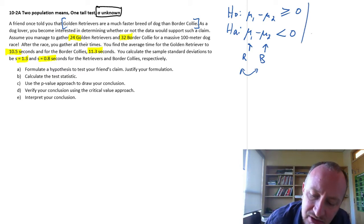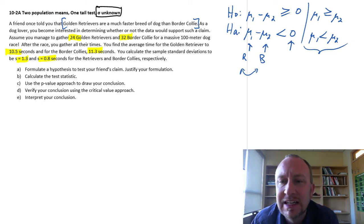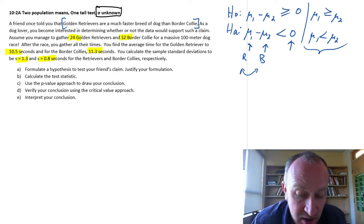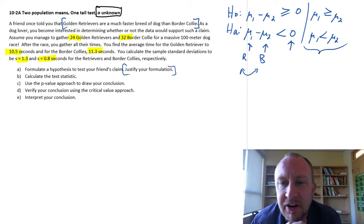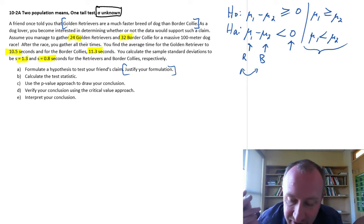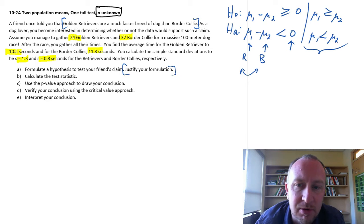And we could also write this as mu1 smaller than mu2, mu1 not smaller than mu2. Okay and again I write it like this only when the hypothesized difference is zero. So why do we justify the equation? Well if our evidence supports the null hypothesis that means that I cannot support my friend's claim. I do not have evidence to show that the retrievers are any faster than the border collies.